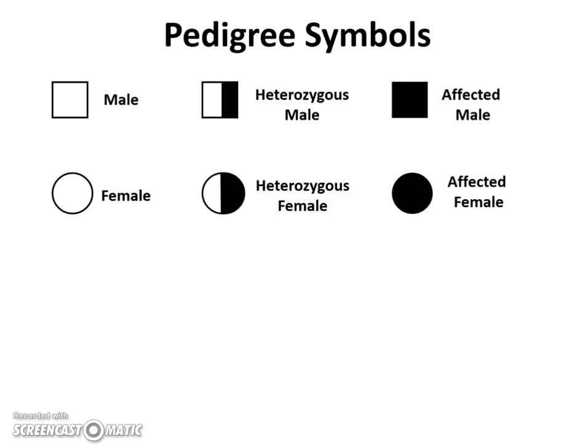We will shade the entire square or circle in if the person is affected. Different diseases have different ways that they're passed on, so this shading can be one recessive, it can be one dominant trait, or it could be two recessive traits — it just depends on the inheritance. When the box is halfway shaded in, it doesn't matter if it's shaded on the right or the left; shading just means that the person is a carrier, or they have one gene, one trait, or one allele for that inherited trait.